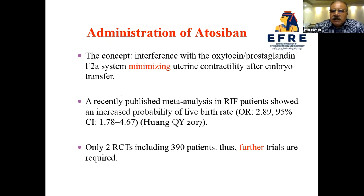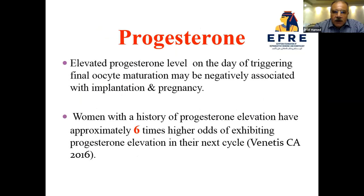Regarding atosiban, administered to minimize uterine contractions, a recently published meta-analysis in RIF patients showed an increased probability of live birth. However, this was based on only two randomized controlled trials including 390 patients, so further trials are required. Regarding elevated progesterone on the day of HCG triggering for final oocyte maturation, this may be negatively associated with implantation and pregnancy.